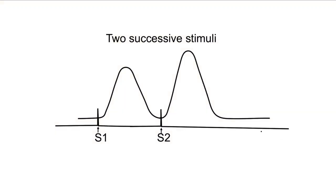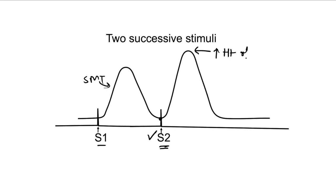Now let us give the second stimulus a little earlier. As soon as the simple muscle twitch from S1 has ended — that is, relaxation has occurred — the second stimulus is given. What we see is that there is an increase in the height of contraction. So with the second stimulus given just after the end of the simple muscle twitch from the first stimulus, we get an increase in height of contraction.